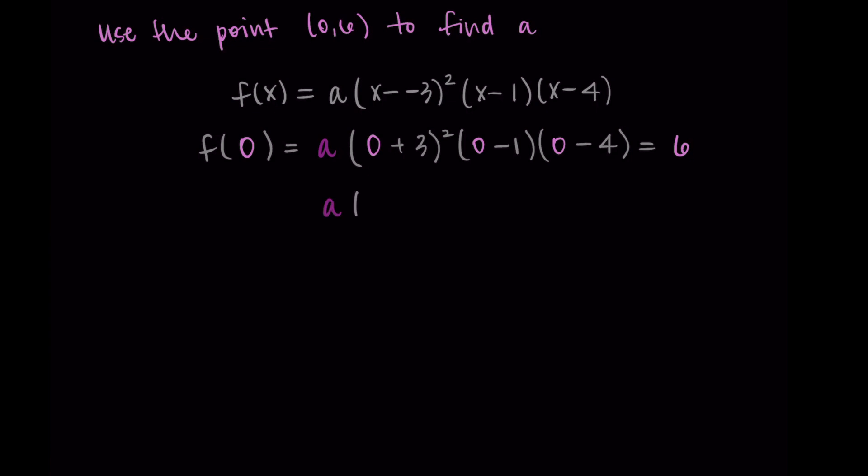All right, so I have the a in front, and now I'm just simplifying. I'm getting three squared times negative one times negative four, and that's equal to six. Now we just keep solving and we'll eventually isolate a. Three squared is nine, and then negative one times negative four is a positive four.